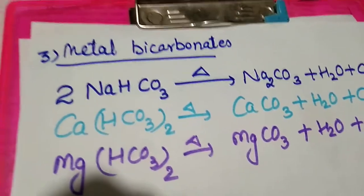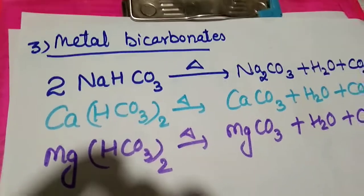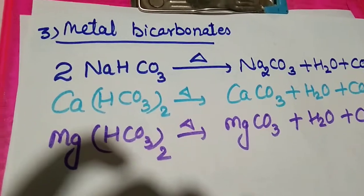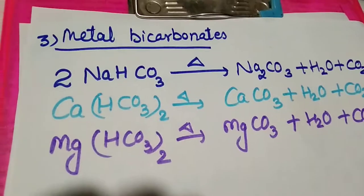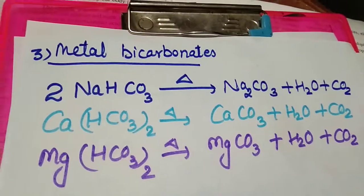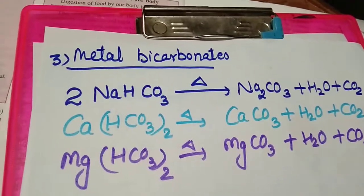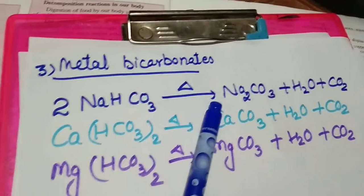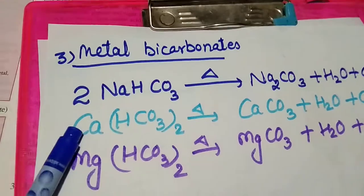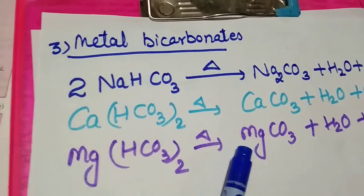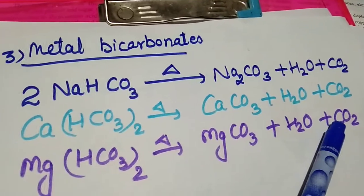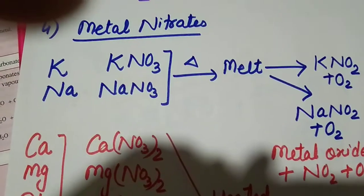Next we have metal bicarbonates, that is hydrogen carbonate HCO3-. This is bicarbonate ion. Metal bicarbonates when heated decompose to give metallic carbonates, water and carbon dioxide gas. For example, sodium bicarbonate upon heating gives sodium carbonate, water and CO2. Similarly, calcium or magnesium bicarbonates upon heating give magnesium carbonate, water and CO2 gas.